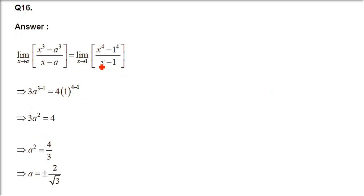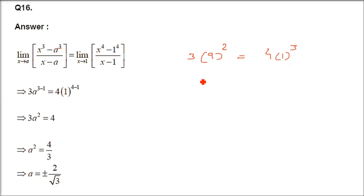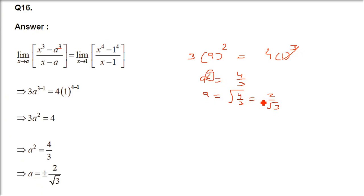Question number 16: both sides use the limit formula. Applying it gives 3 times a squared equals 4 times a cubed, leading to a squared equals 4 by 3. By the same logic, a will be plus and minus 2 by root 3.